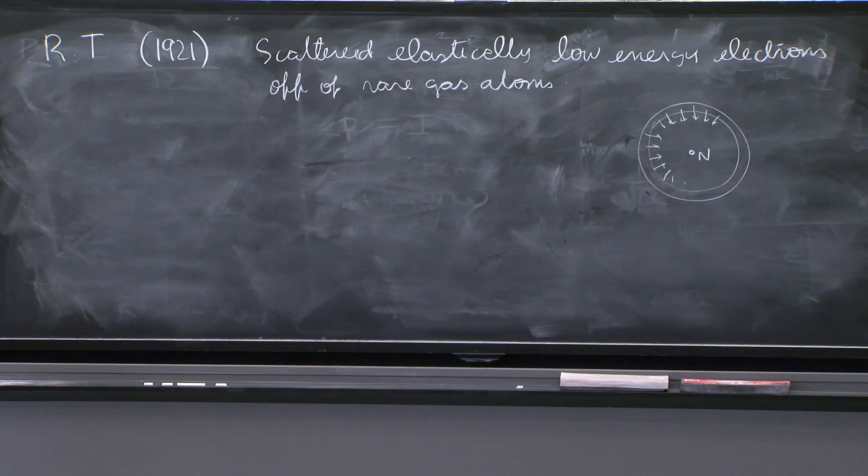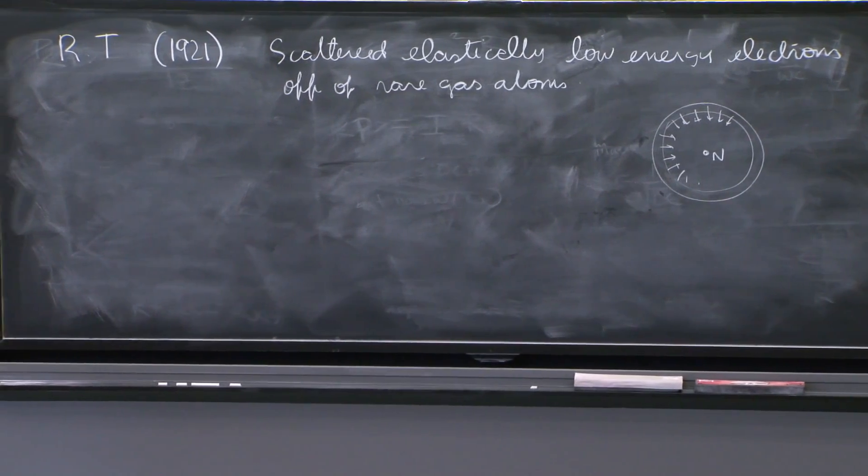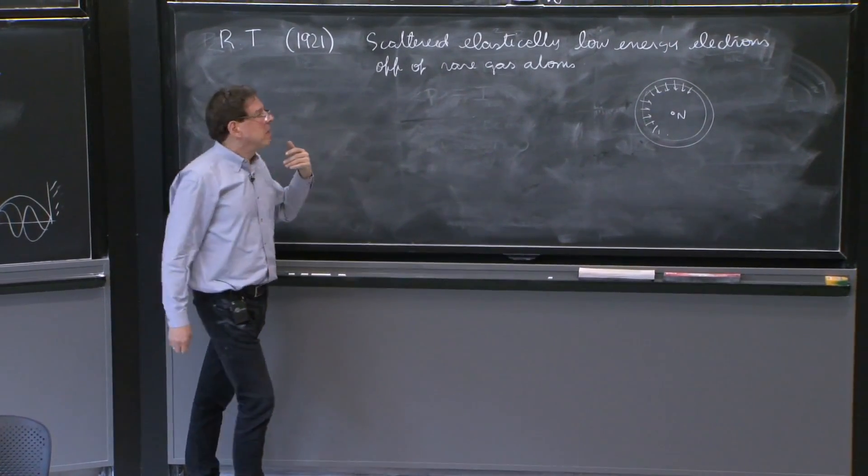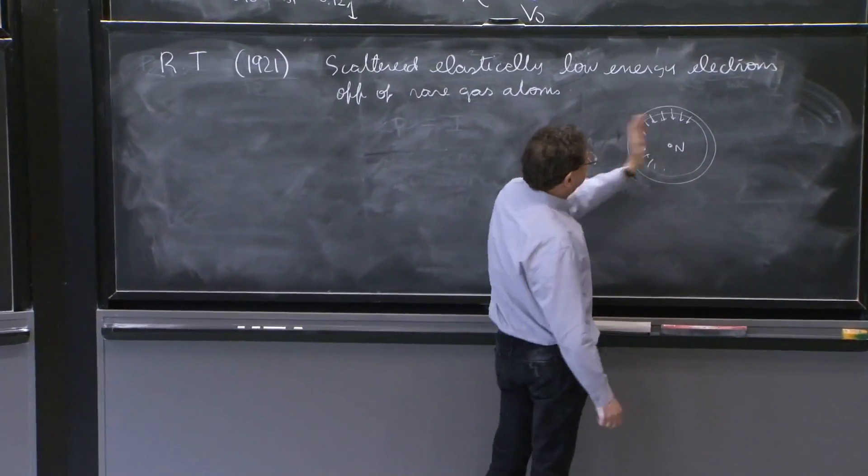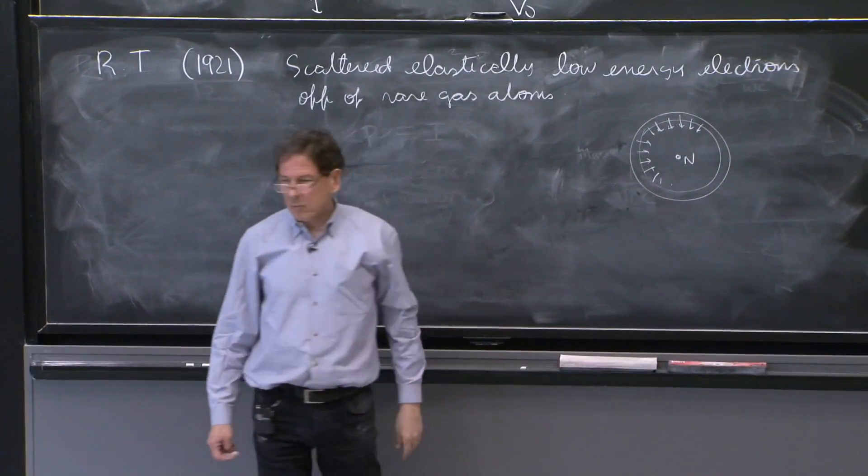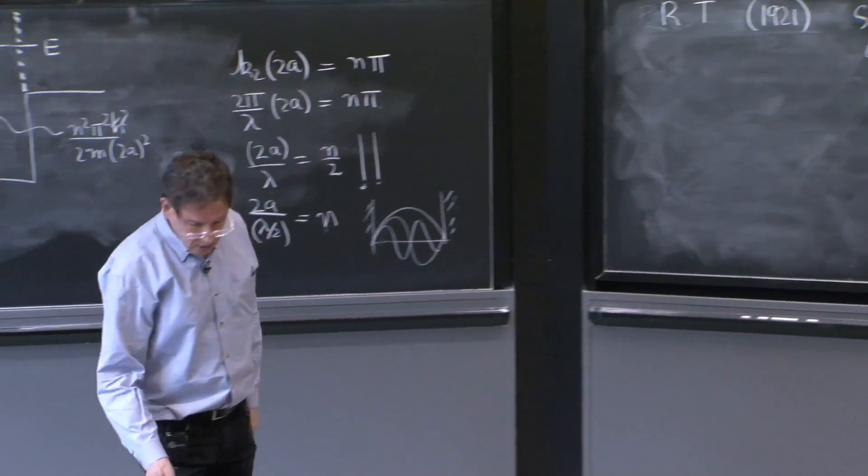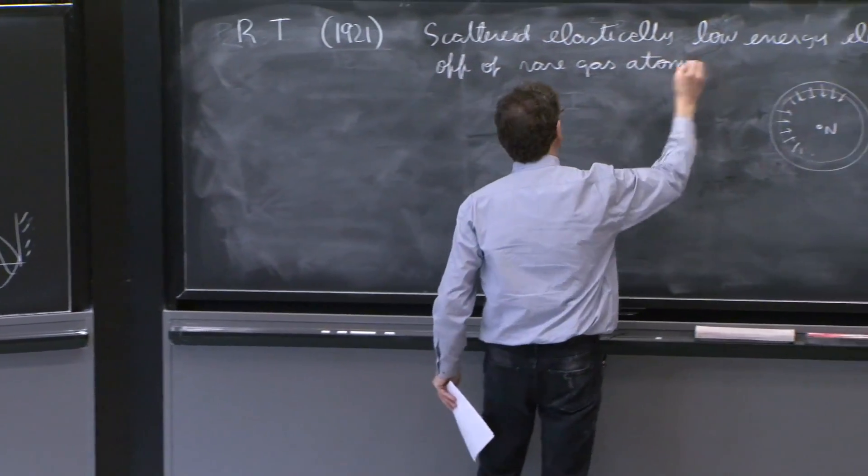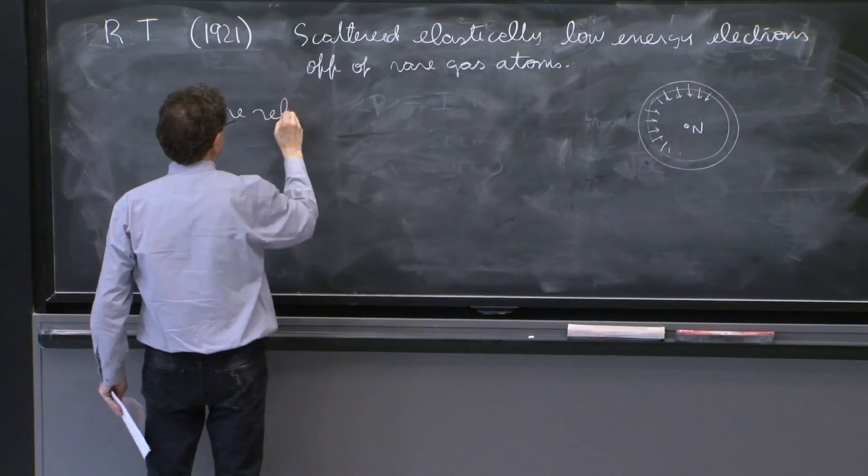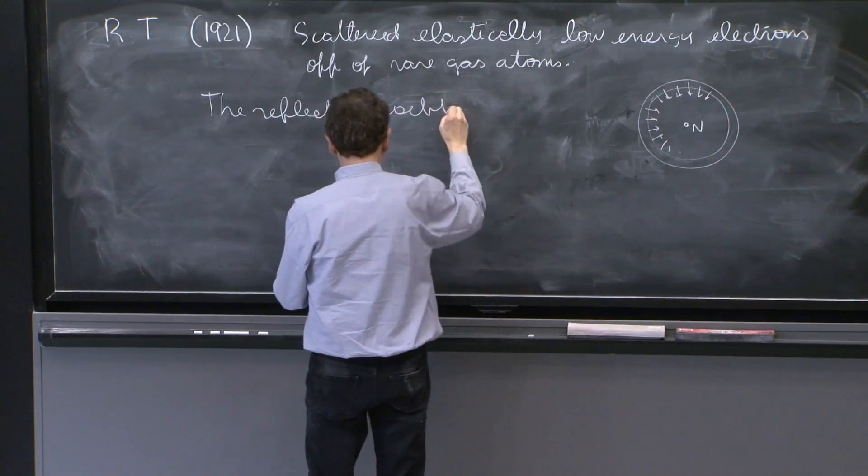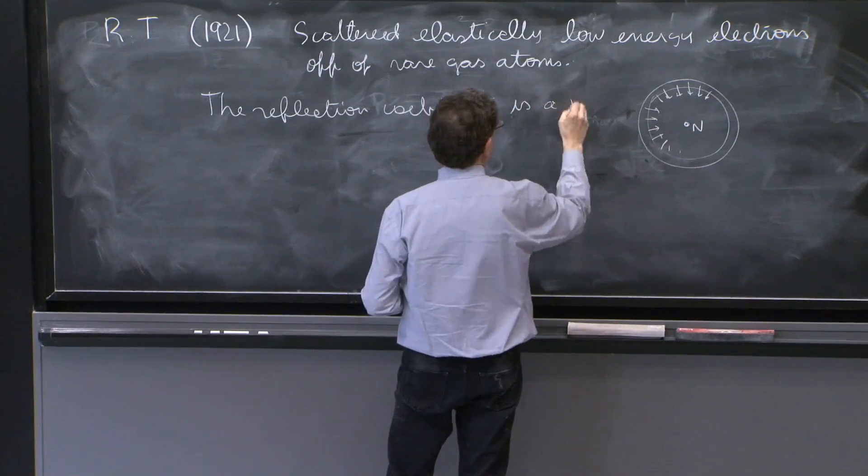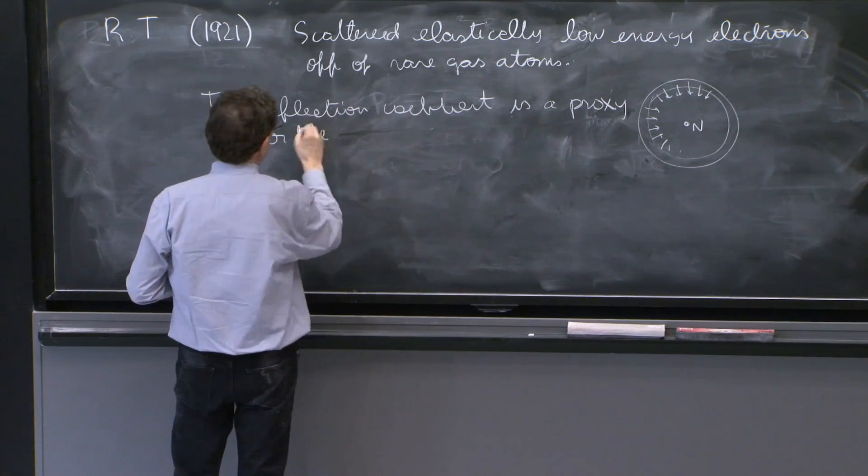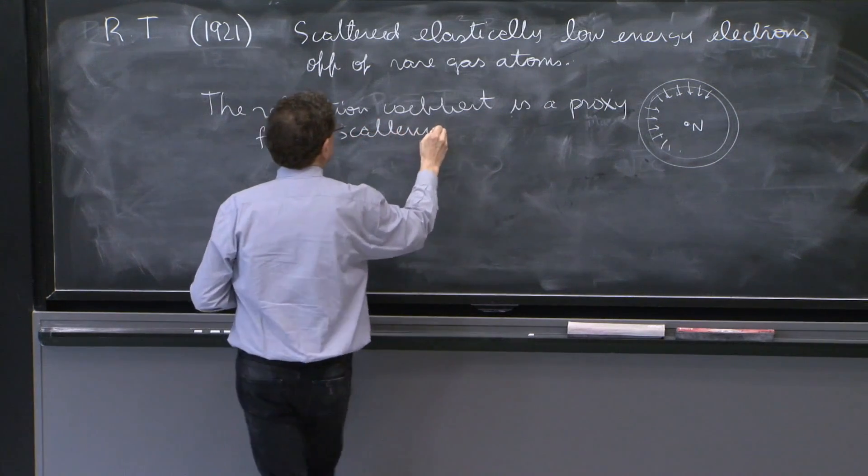So what these people did, were throwing these electrons. And they considered that these electrons scattered a lot when they bounced back. On the other hand, if they continued, if the electrons passed by, they said nothing has happened. And so the reflection coefficient is a proxy, a good representation, for this scattering cross section.